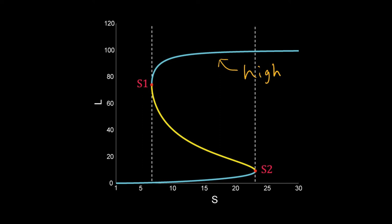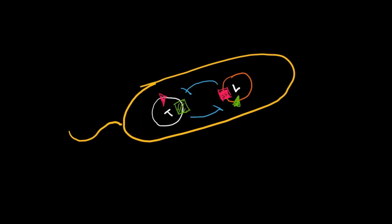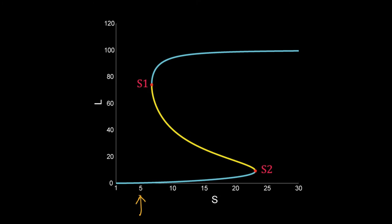Suppose we have created a genetically modified E. coli with this mutual repressor circuit. Now we grow the E. coli in a flask and then add S. Say the dose of S is equal to 5, and then we wait for some time so that the gene expression reaches a steady state. For this value of S, the system is monostable with very low expression of L.